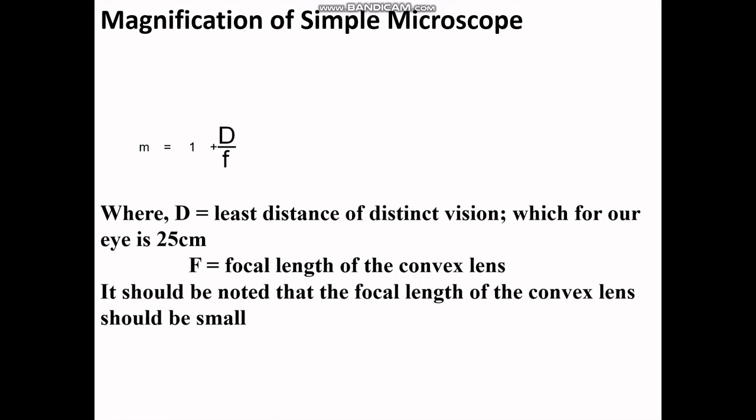You know M is the symbol for magnification. D is least distance of distinct vision which for our eye is 25 cm. F is obviously the focal length and since we are using a convex lens, so it is focal length of convex lens.